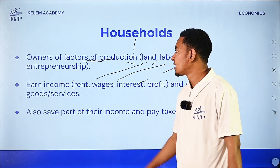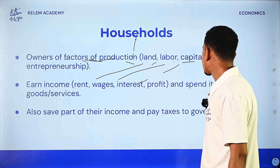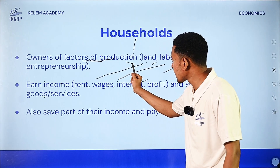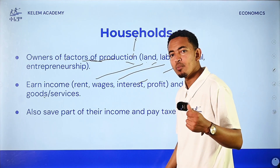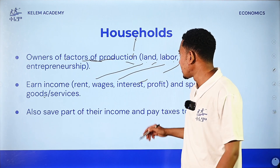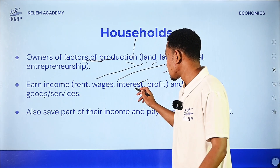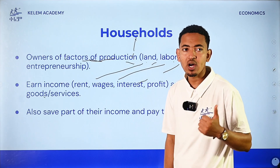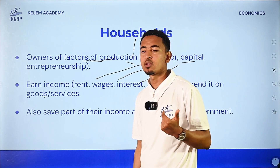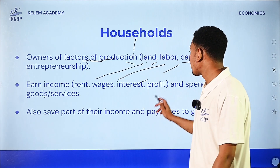Households want to earn income from their factors of production and then spend it on goods and services. If you have capital, you will earn an interest rate.